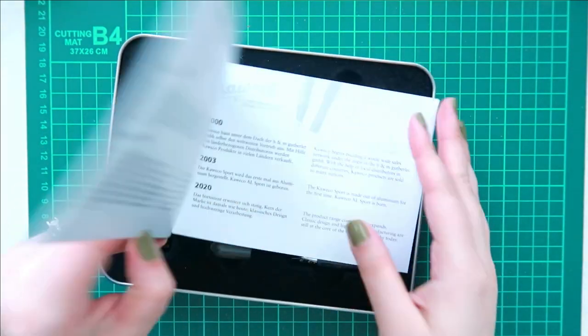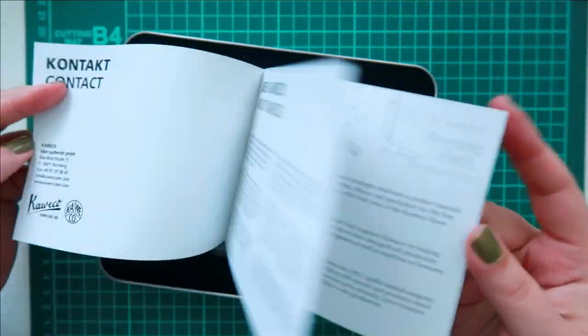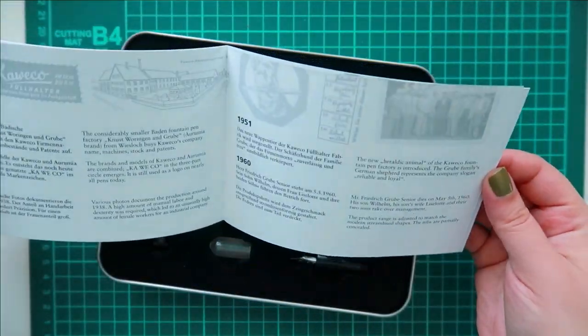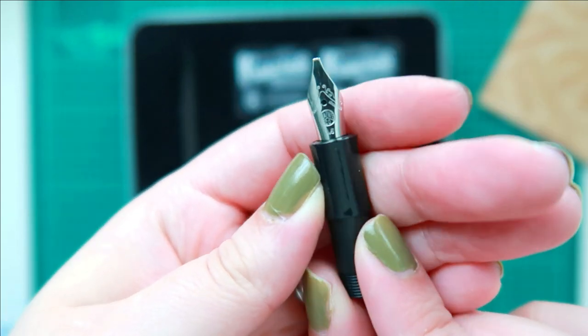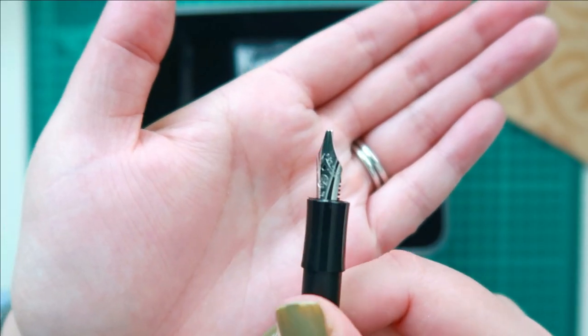I had seen this kit before but I didn't realize there were four nibs included. I am actually really surprised by that. It does come with a 1.1, 1.5, 1.9, and a 2.3 size nib.